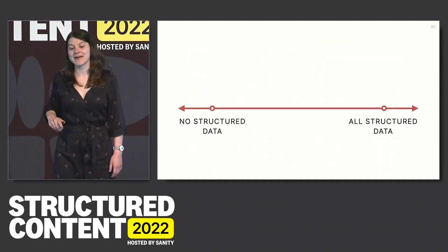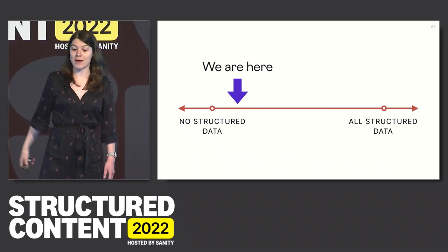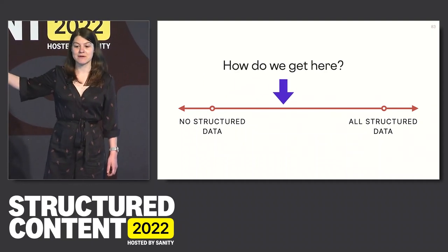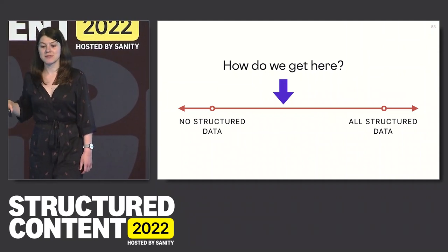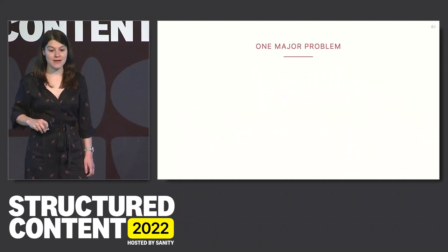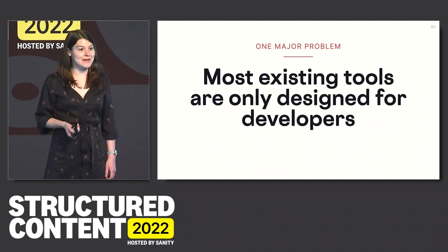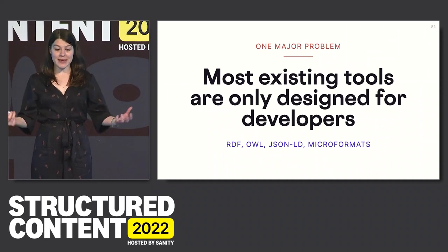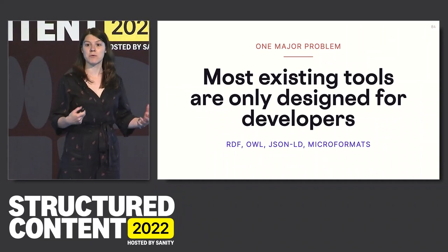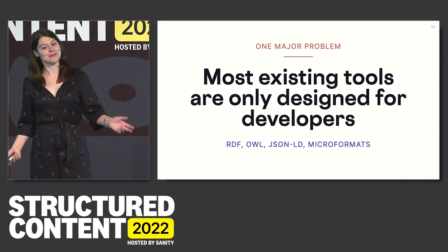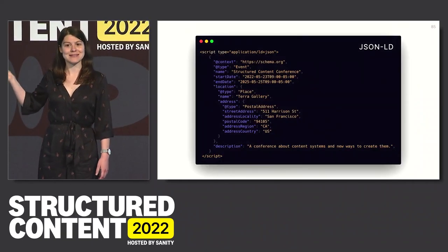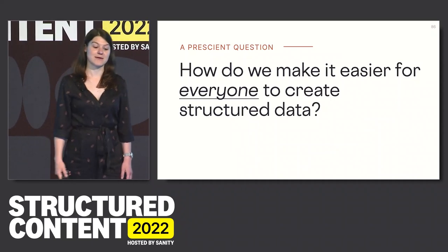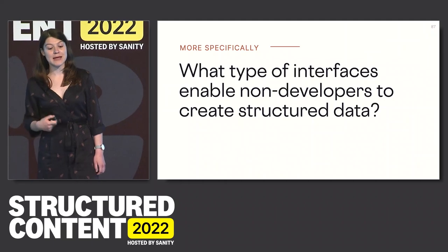So back to our useful structured data binary. Right now we're at the low end — there is very little structured data on the web, and there's not much in the way of accessible, high quality software that helps us create ontologies and structured data. I want to know how we get further along — not all the way to all structured data, but just nudging ourselves further. The goal is more structured data, not all structured data. One of the major barriers is that almost all our existing tools are only designed for developers. All the effort has gone into RDF, OWL, and JSON-LD rather than tools for designers and content people — and this is a really rough user interface to work in.